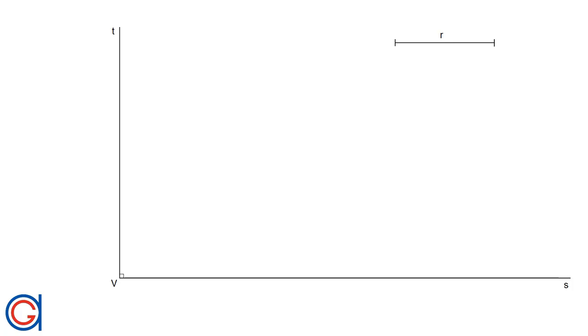Hello, today we are going to learn how to link two given perpendicular lines T and S, which intersect at a point V with the arc of a given radius R, as can be seen here on our screen. So the first step,